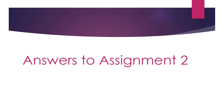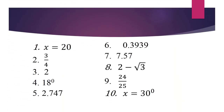Answers to the assignment: Question 1: x is 20. Question 2: the answer is 3 over 4. Question 3: the answer is 2. Question 4: 18 degrees. Question 5: the answer is 2.747. Question 6: 0.3939. Question 7: the answer is 7.57. Question 8: the answer is 2 minus root 3. Question 9: 24 over 25. Question 10: x is 30 degrees.